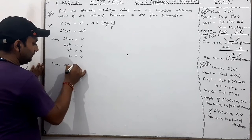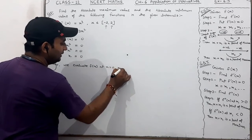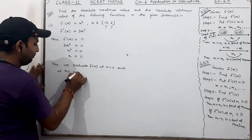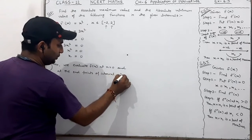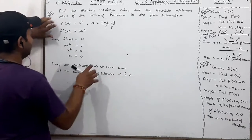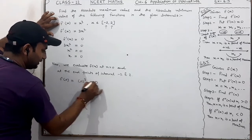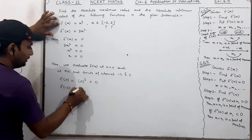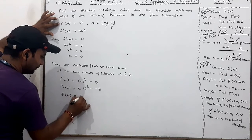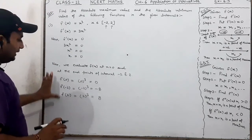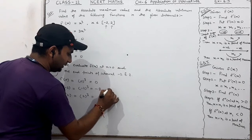We evaluate f(x) at x = 0 and at the endpoints of the interval. The interval's endpoints are minus two and two. So first, we check f(0): x³ means 0³ = 0. Then f(−2): (−2)³ = −8. And f(2): 2³ = 8. So 8 is our maximum value.